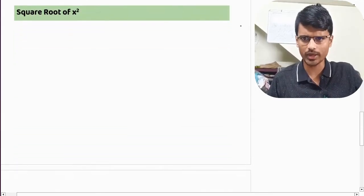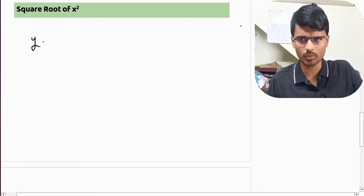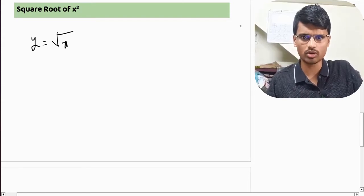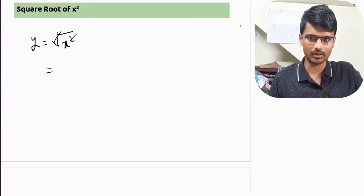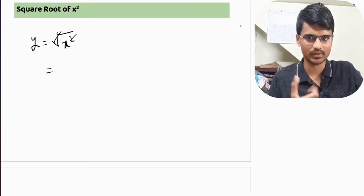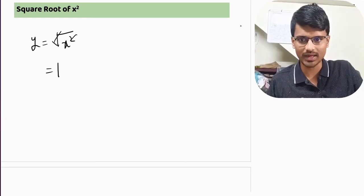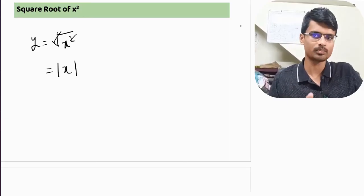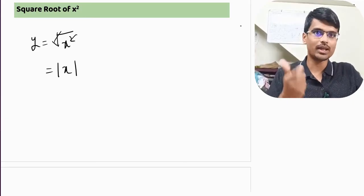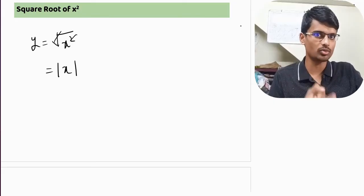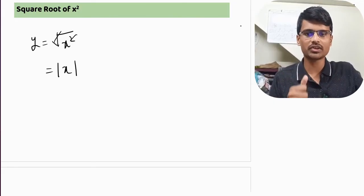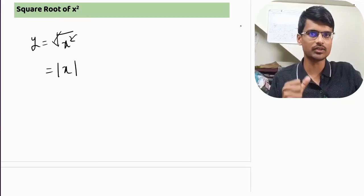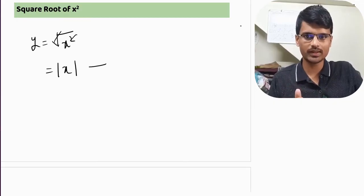Let us take square root of x square. The question comes, then what is square root of x square? Can I cancel this and write x? No, that is wrong. We do not know what is the value of x. That is the reason we write it as mod x. Because square root of a number cannot be negative. It needs to be always positive. So we take help of this modulus function. Modulus function ensures that the result is always a positive number.